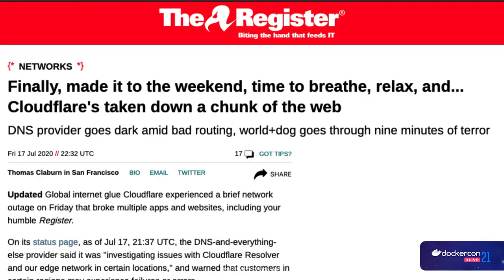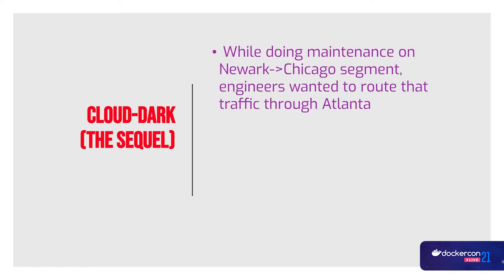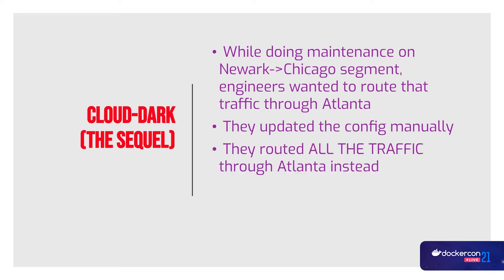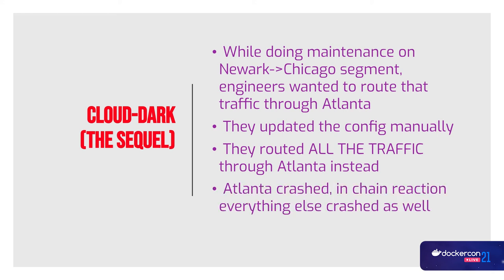There was another serious DNS incident — a year after Cloudflare took down a chunk of the web, they had another story. During maintenance in Chicago, engineers wanted to route traffic through Atlanta and updated the config manually, but they used the wrong regular expression. Now all traffic in the world ran through Atlanta, and after a short time the Atlanta server crashed, then other data centers crashed too in a chain reaction — affecting everyone.